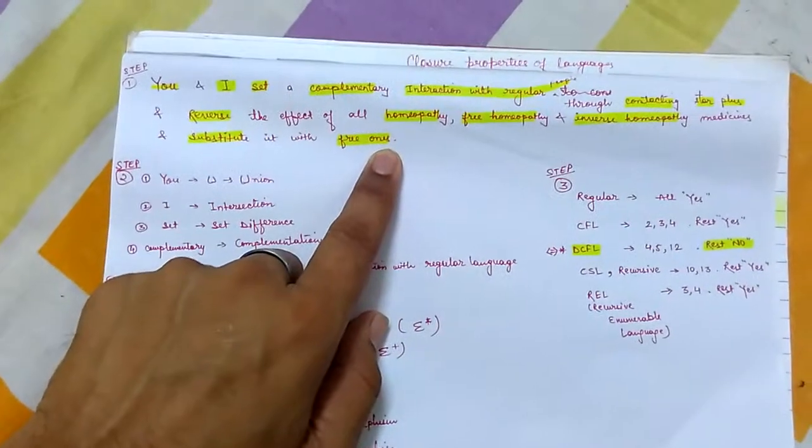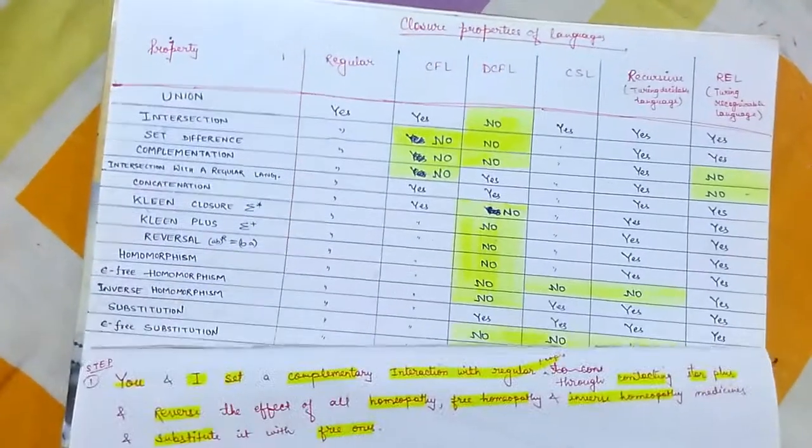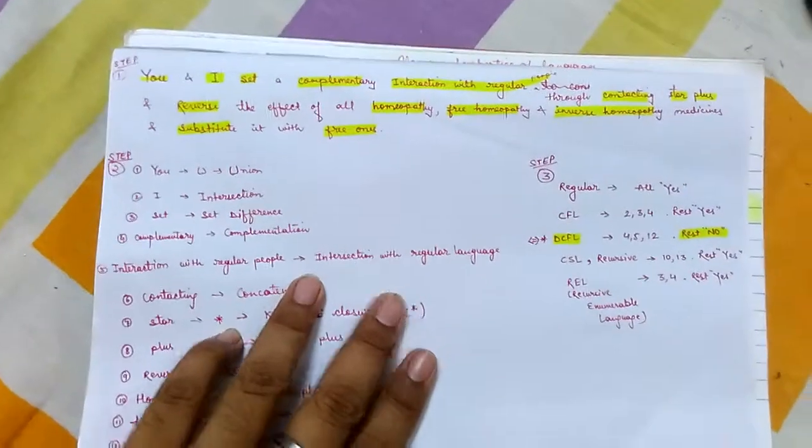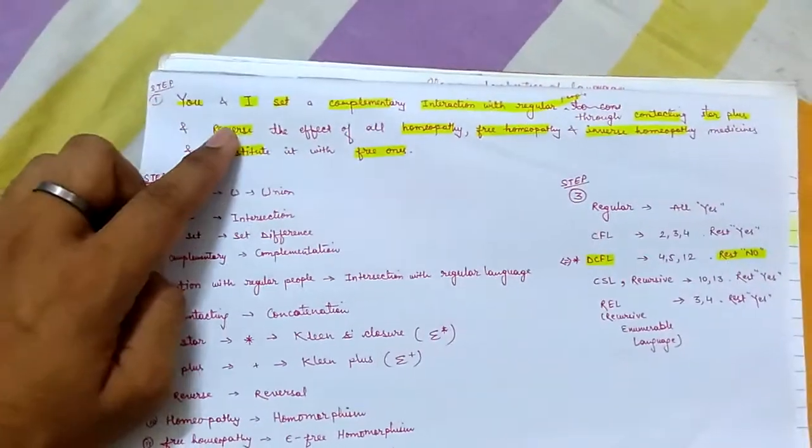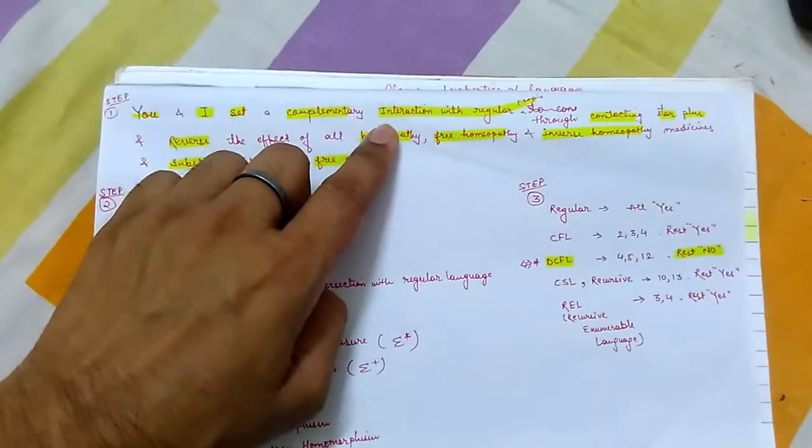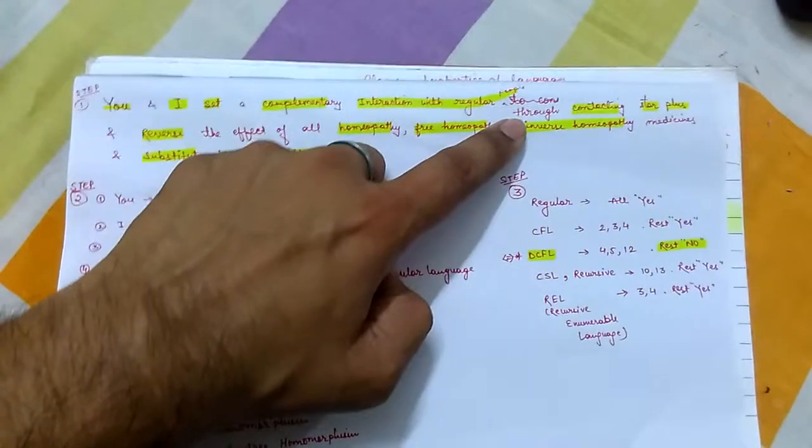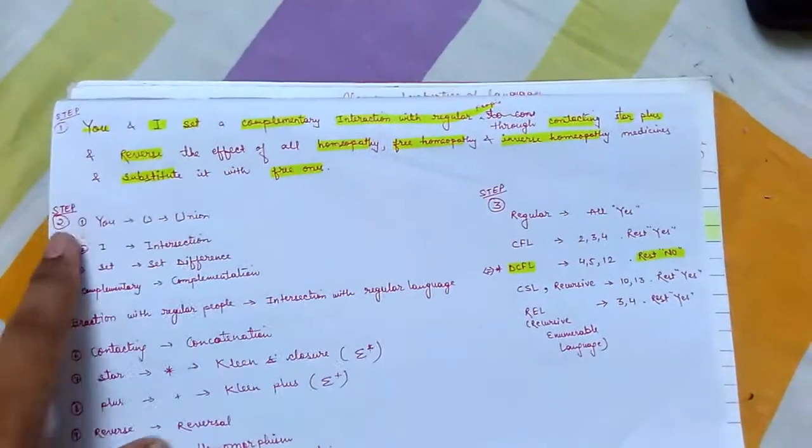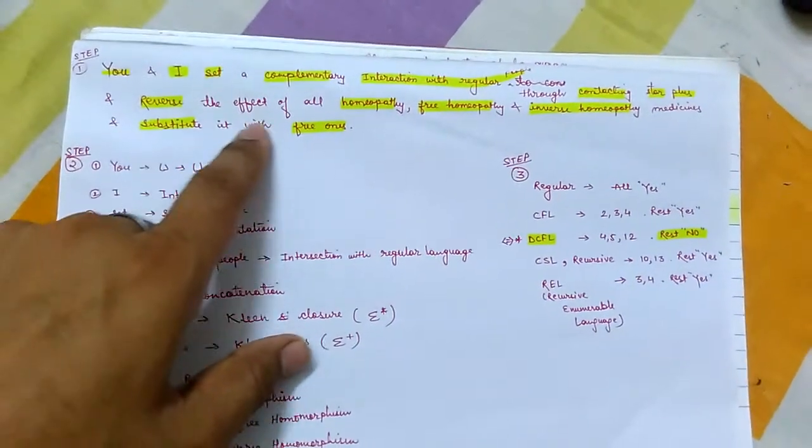Let me iterate it for you. You and I set a complementary interaction with regular people through contacting Star Plus channel and reverse the effect of all homeopathy, free homeopathy, and inverse homeopathy medicines and substituted with the free ones.